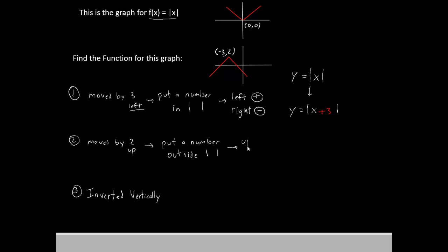Now if our goal is to move it up, the number should be positive, and if our goal is to move it down, the number should be negative. Well, our goal is to move it up by 2, so the number is positive, and the number we use is 2.